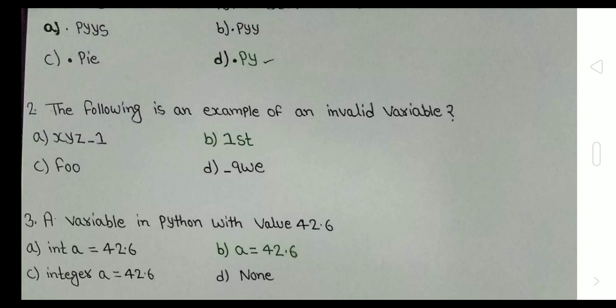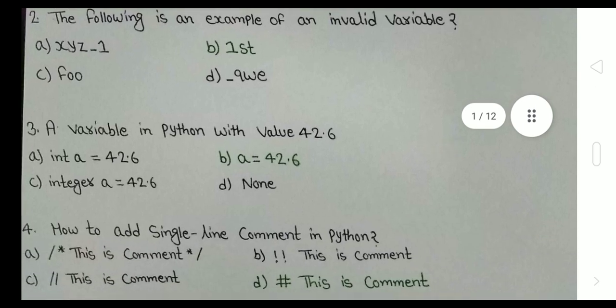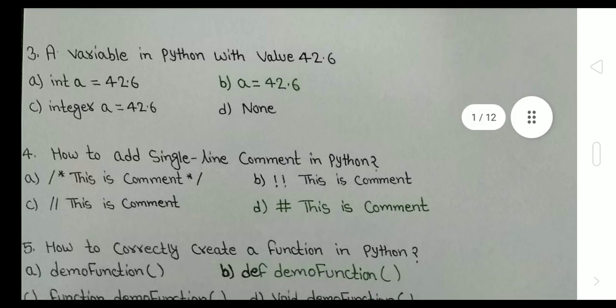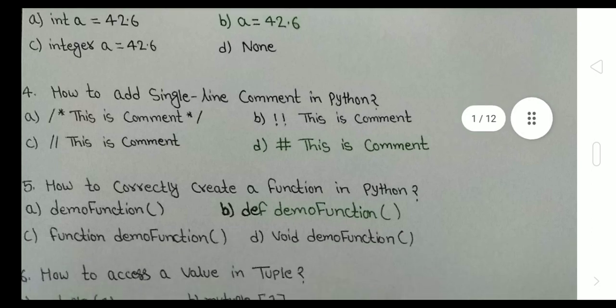A variable in Python with value 42.6, we declare a = 42.6. B is the right answer. Fourth question: single comment. We use hashtag for a single line comment in Python.